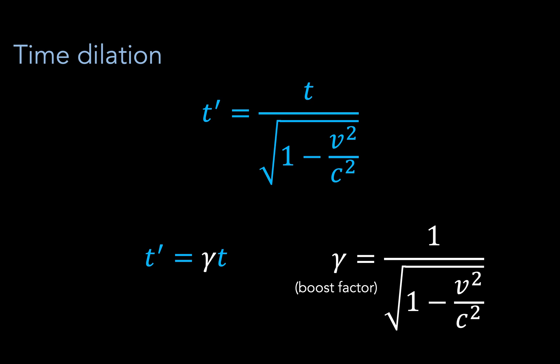Note that in order for the boost factor to have a real value, v has to be less than or equal to c, or else the denominator would have to be imaginary. This basically says that nothing can ever travel faster than the speed of light, or else there wouldn't be a real solution to this equation.